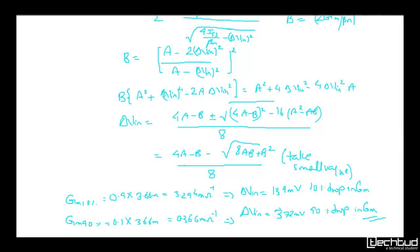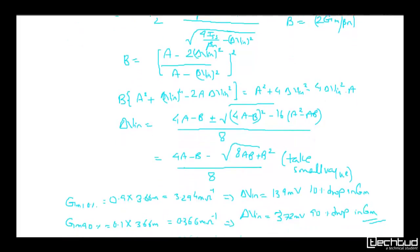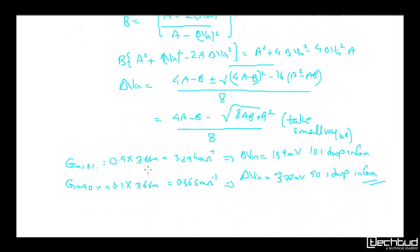For 10% drop, gm = 0.9 × 3.36 mA/V. For 90% drop, gm = 0.1 × 3.36 mA/V. With ISS = 1mA and β = 0.134 × 100, we calculate: when gm drops by 90%, δVin = 131mV. When gm drops by 10%, δVin = 372mV. So when VIN1 - VIN2 is 131mV, gm drops by 90%, and when the difference is 372mV, gm drops by 10%.